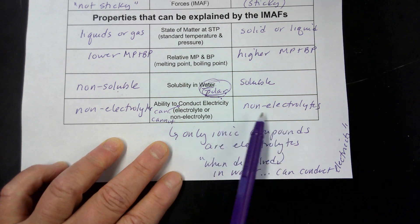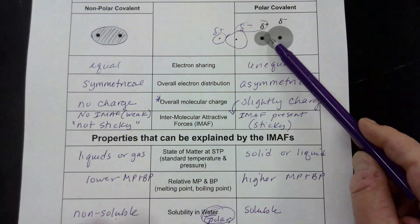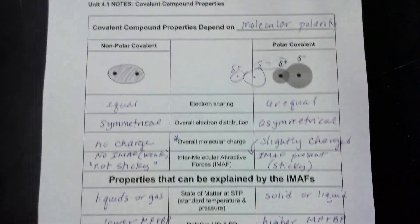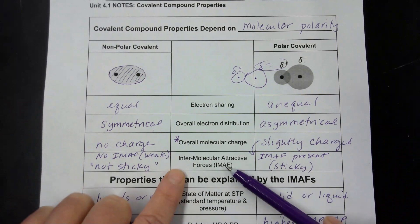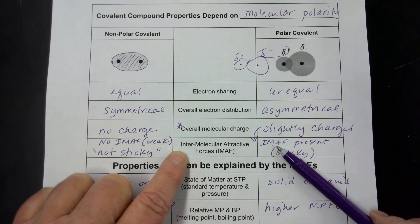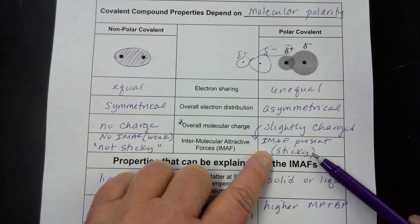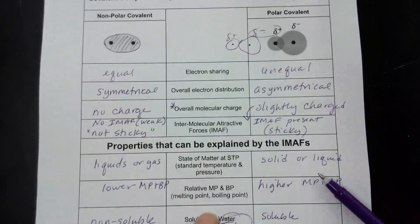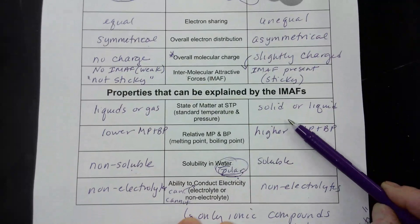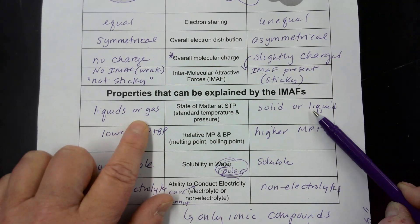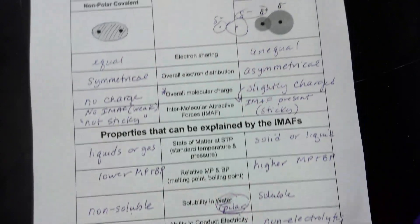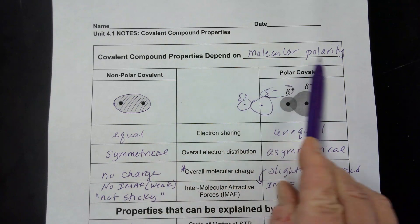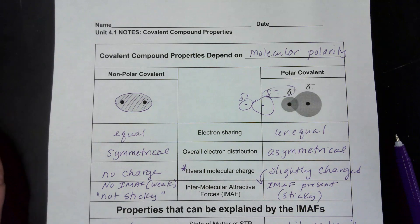Nonpolar covalents won't even dissolve in water, so that makes sense that they are non-electrolytes. Polar covalents will dissolve in water, but they're not going to conduct electricity because they don't have freely moving charged particles — their charged particles are stuck together, not separated. So to summarize: if you know the polarity of the molecule, that tells you whether it has intermolecular attractive forces. If it does, as in polar covalent, the molecules are sticky, they have higher melting points and boiling points, they stay in the solid or liquid phase, they're soluble in water, but they are not electrolytes because they're not free to move. Covalent compound properties depend on the polarity of the molecule.